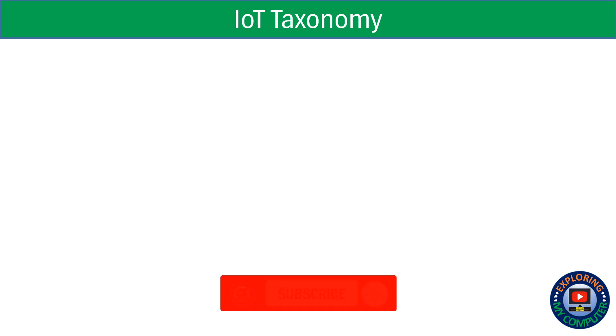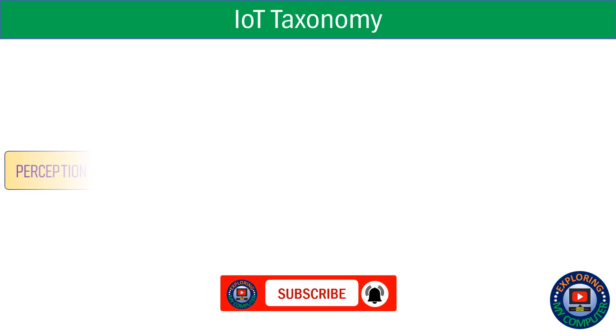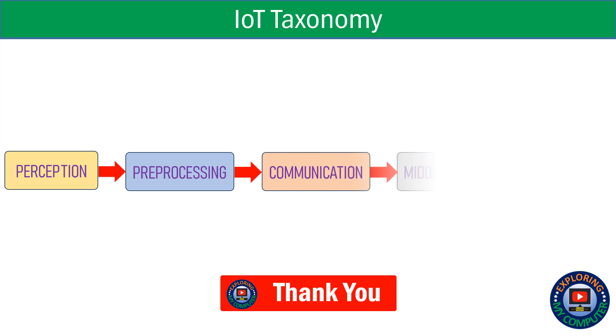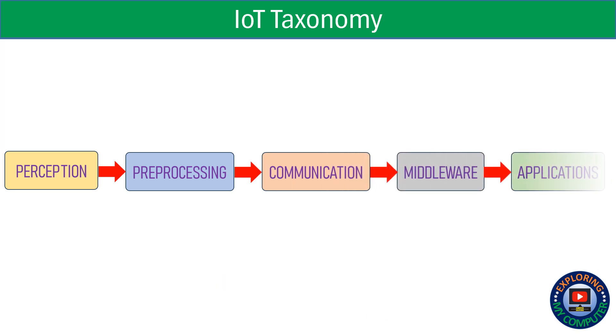The taxonomy for the Internet of Things is shown here. It mainly includes perception, preprocessing, communication, middleware, and applications.